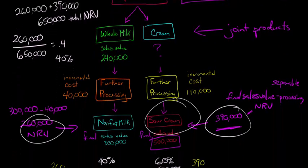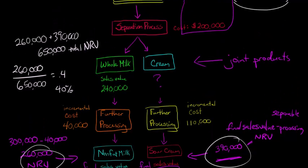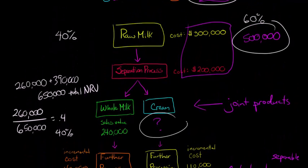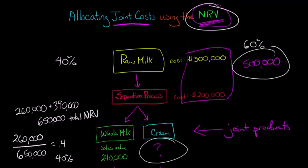But there might be some kind of product where it's an intermediate product here, we've got some joint product, and you're going to process it further into something else, and you don't really know what the sales value is at that intermediate stage, when it first becomes a joint product. And so then you can use this NRV, this net realizable value method, in order to be able to allocate those joint costs.